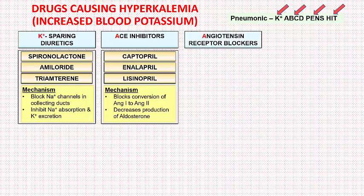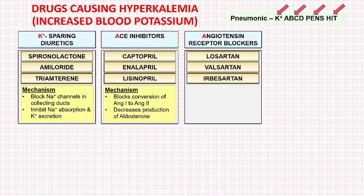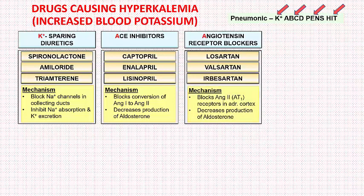The next class is angiotensin receptor blockers, or ARBs. All drugs in this class end with the letters SARTAN — examples include losartan, valsartan, irbesartan, olmesartan, etc. In the word SARTAN: A stands for angiotensin, RT for receptor, and AN for antagonist. These drugs block angiotensin 2 AT1 receptors in the adrenal cortex, decreasing aldosterone production, which results in sodium excretion and potassium retention.